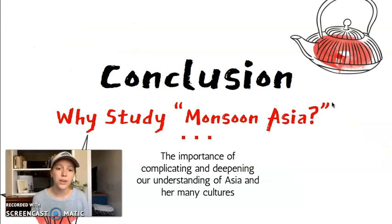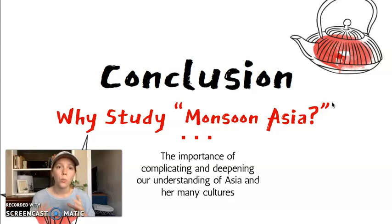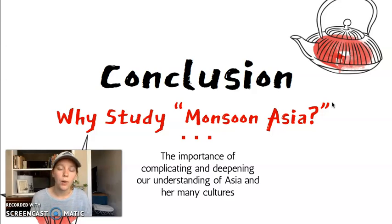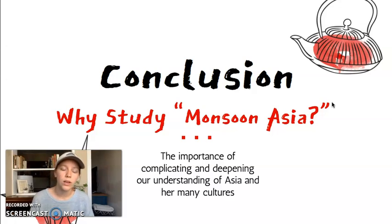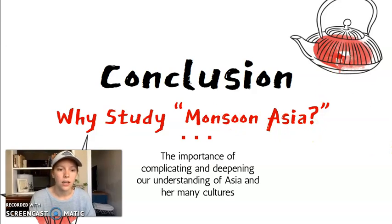So why study Monsoon Asia? As I've talked about in this video, it's important to study parts of Asia and break down this very large region into manageable chunks — looking at the region that has a lot of similarities. I didn't talk about religion and philosophy because we'll be talking about that next week, but there is an incredible syncretism and similarity in religion and philosophy as well. That's why we study Monsoon Asia. Over the rest of this module, you'll be looking at other people's perspectives on how to study Asia and why it's so complicated. Good luck with the rest of this module — see you next time.